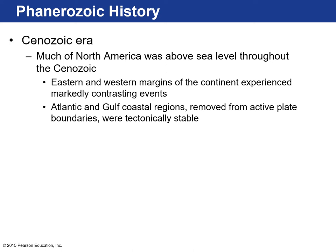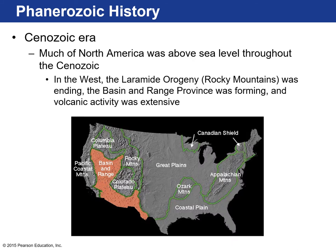The Cenozoic — the past 66 million years. The eastern and western margins of the American continent experienced very different events. The Atlantic and Gulf Coast regions, removed from any major plate boundaries, were like a passive margin: slowly eroding, with a lot of deposits, glacial and interglacial periods, rising and lowering of sea level. The western margins saw subduction, a lot of volcanic activity, a lot of uplift, and crustal extension. Over the past 20 million years, the Basin and Range Province has been stretching and becoming thinner and thinner.